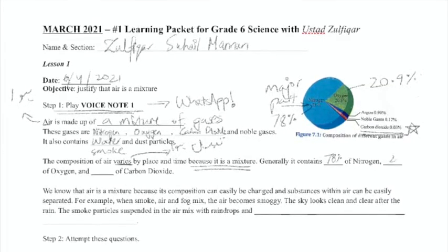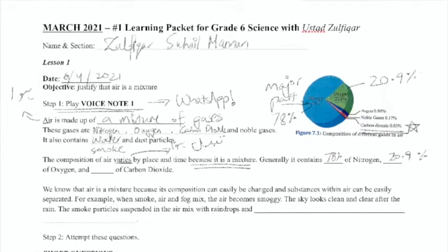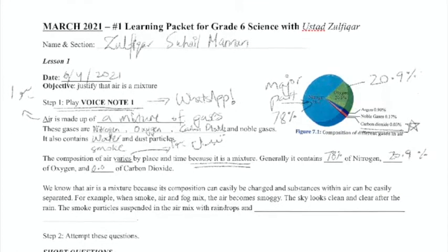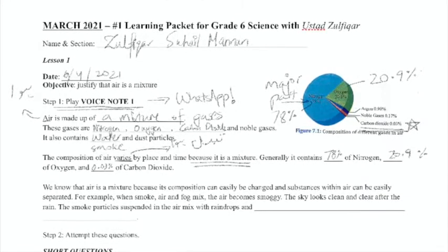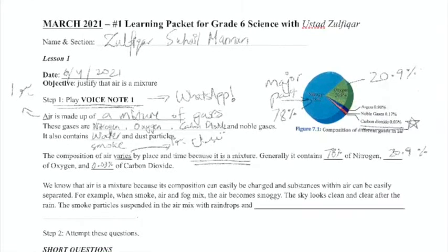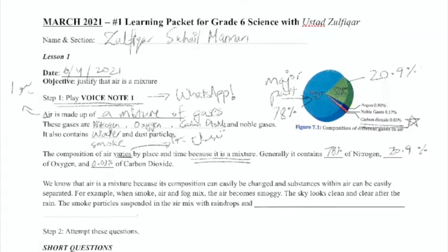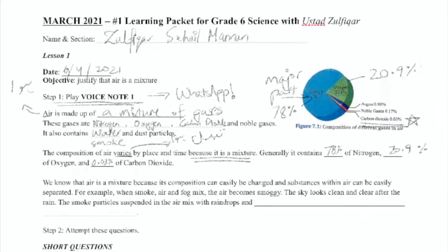Generally, it contains 78% of nitrogen, 20.9% of oxygen, and 0.03% of carbon dioxide. We know that air is a mixture because its composition can easily be changed and substances within air can be easily separated.